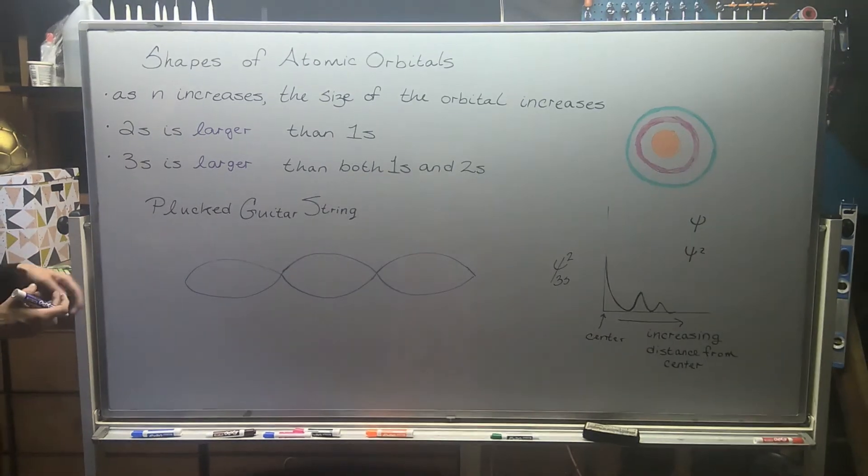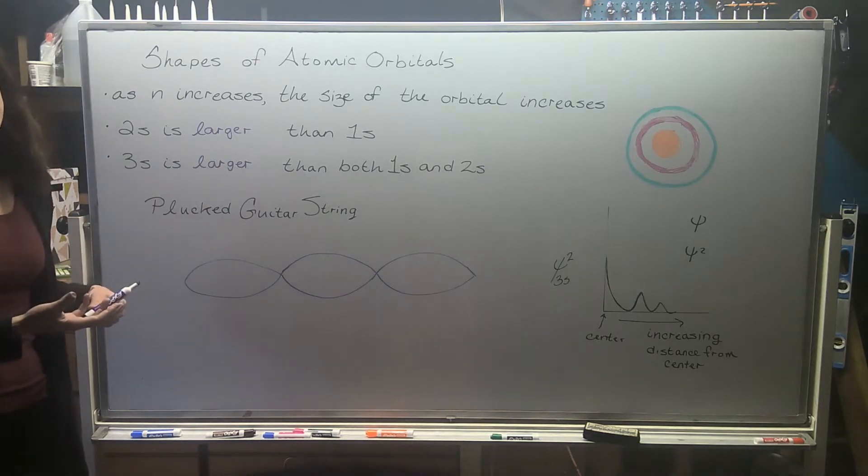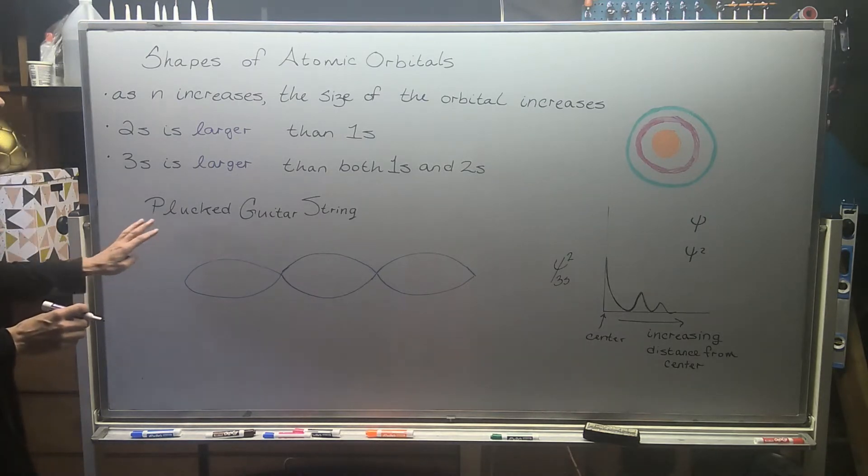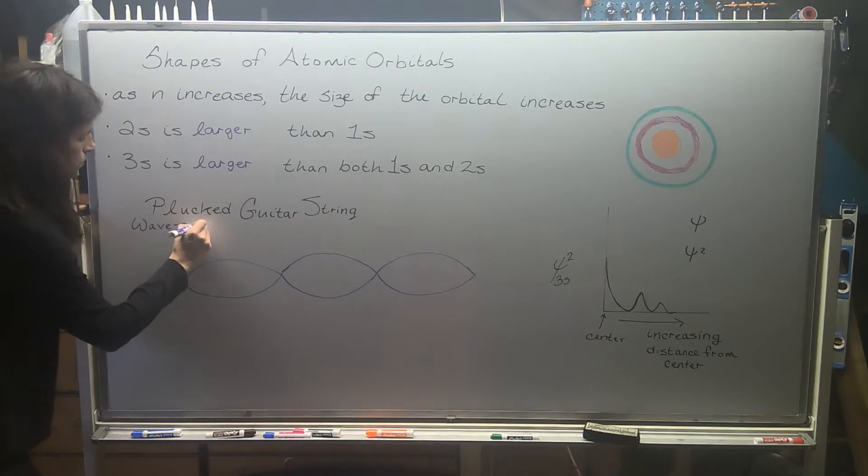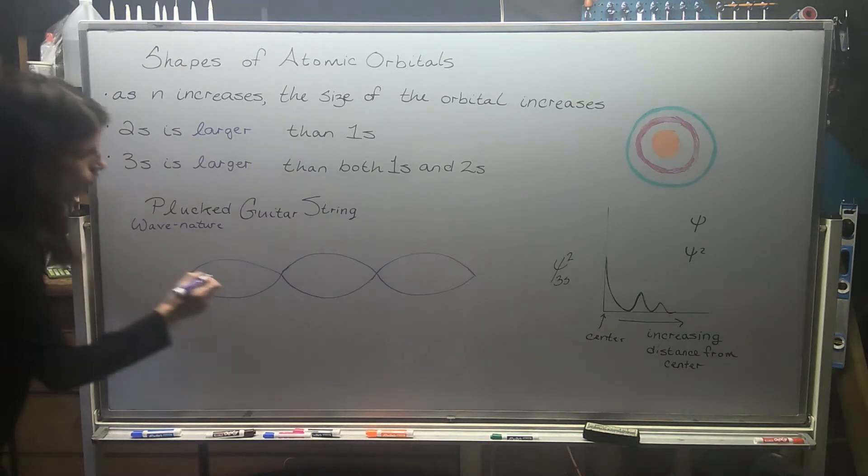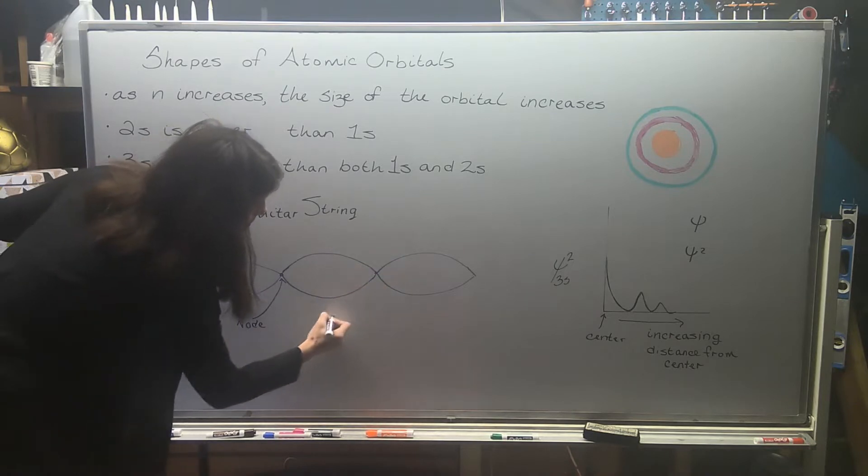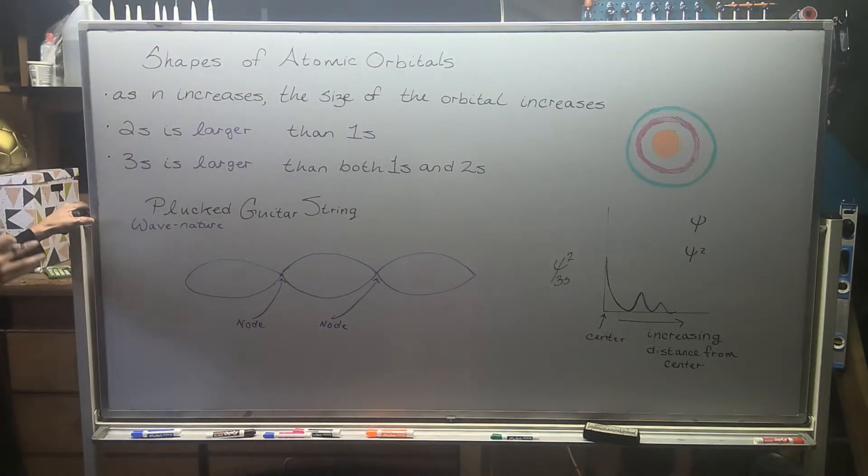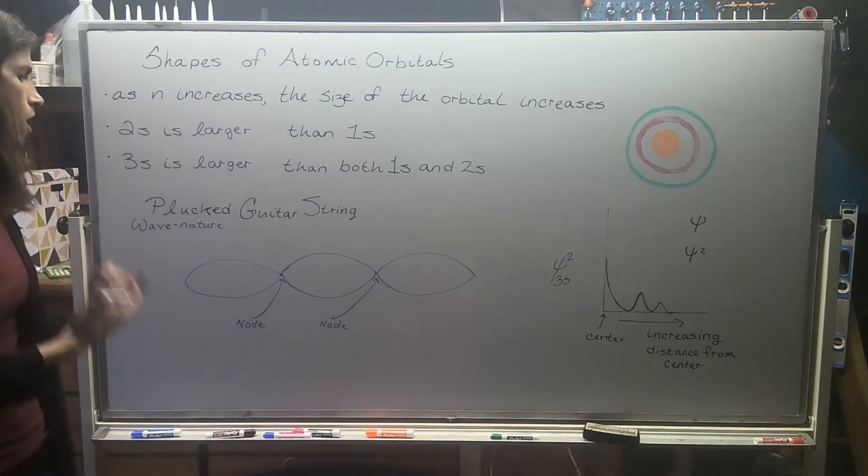There's a couple things to consider. First off, there's this idea of nodes. If you have a plucked guitar string, and I bring up a guitar string because remember, we're thinking of the electron as both a particle and a wave. So thinking about it this way addresses that wave nature of the electron. Waves, when they move, have this natural phenomenon called nodes. Just want you to know that there's these things called nodes that naturally exist, waves that are in motion.